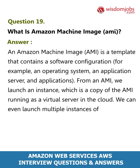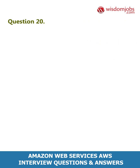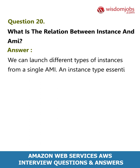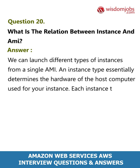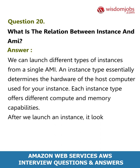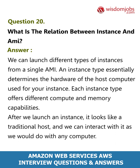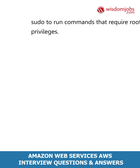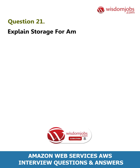Question 20: What is the relation between instance and AMI? Answer: We can launch different types of instances from a single AMI. An instance type essentially determines the hardware of the host computer used for your instance. Each instance type offers different compute and memory capabilities. After we launch an instance it looks like a traditional host and we can interact with it as we would with any computer. We have complete control of our instances and can use sudo to run commands that require root privileges.